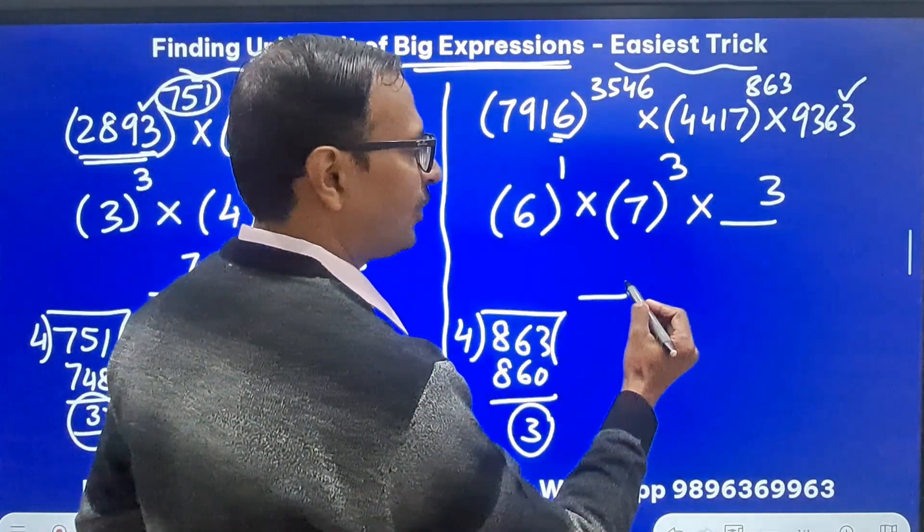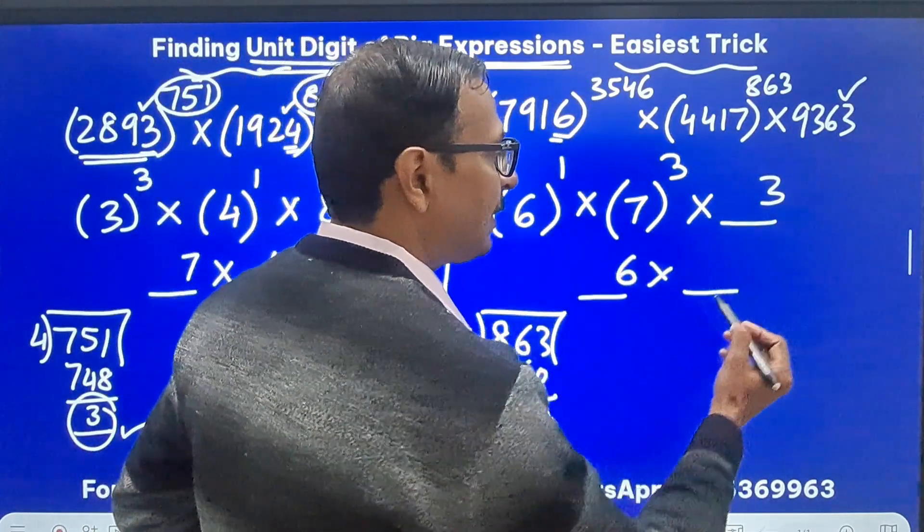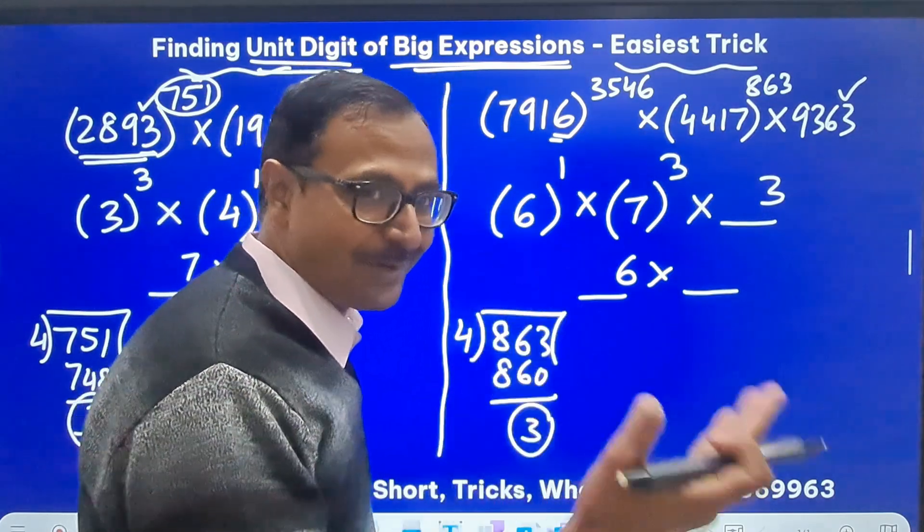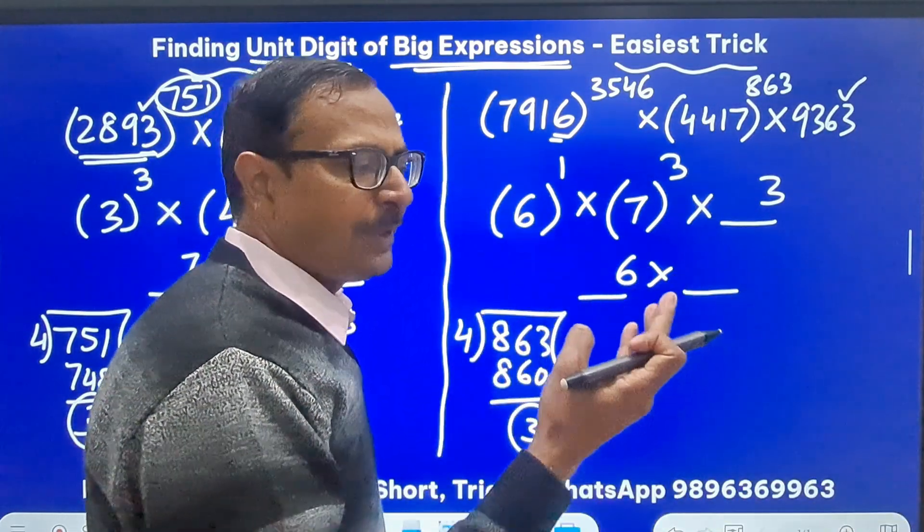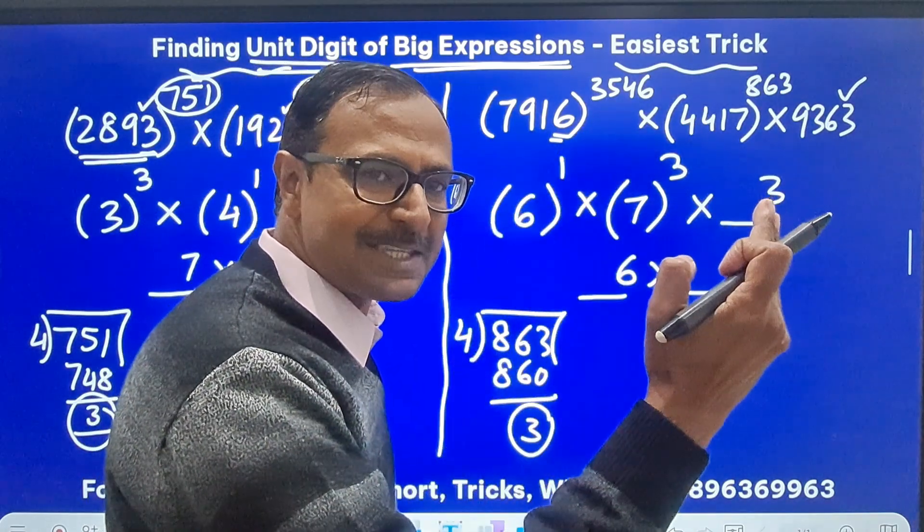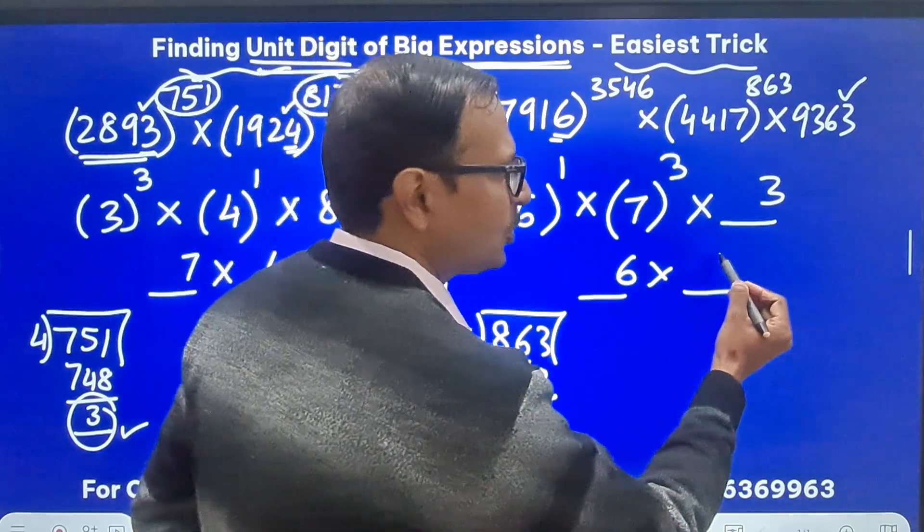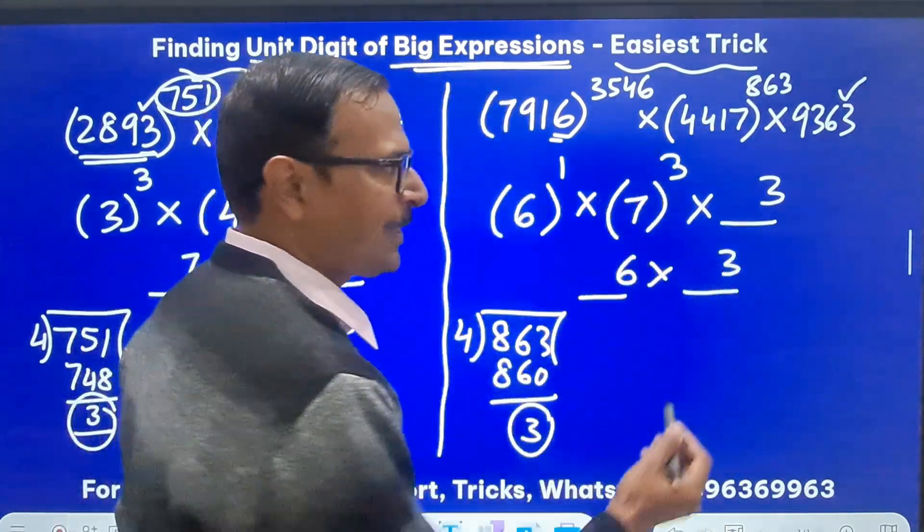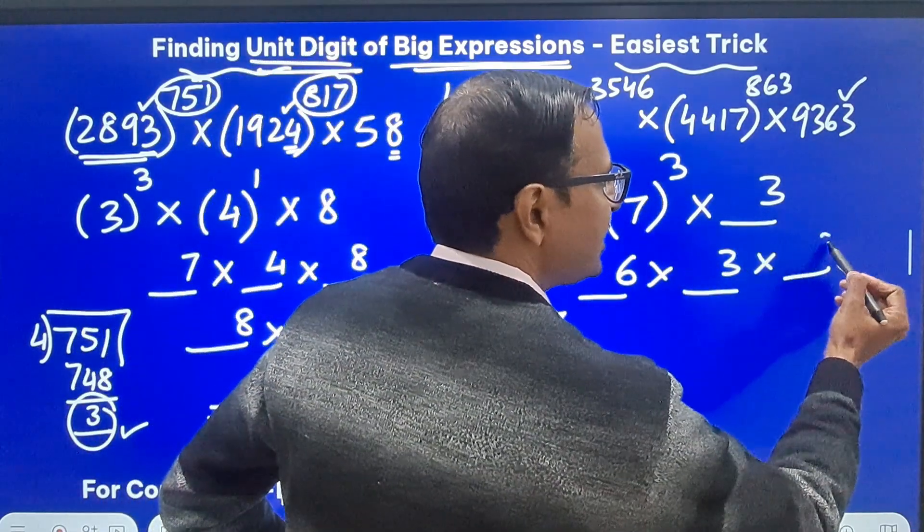So 6 power 1 ends in 6. 7 power 3 ends in 3. So you don't have to cube it. Okay and finally this also ends in 3.